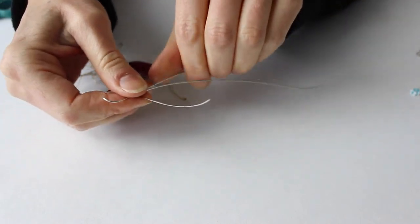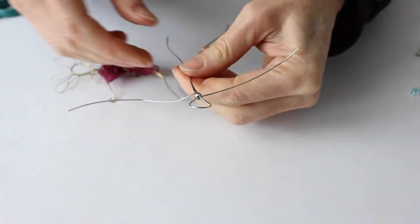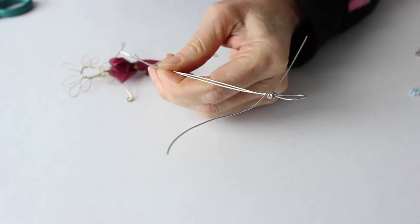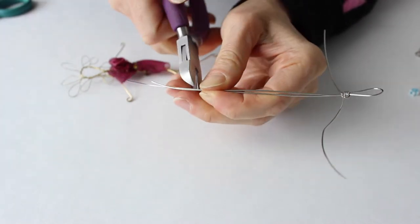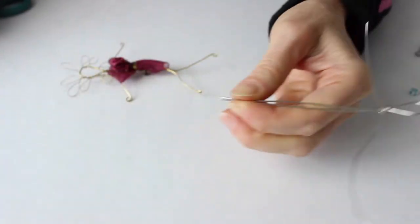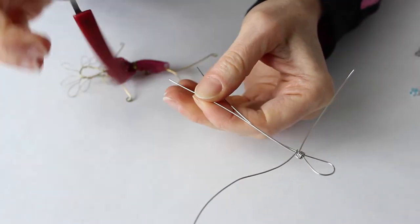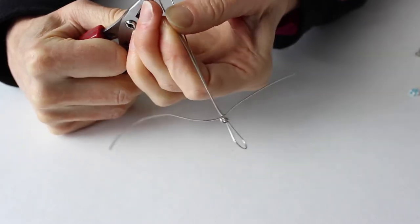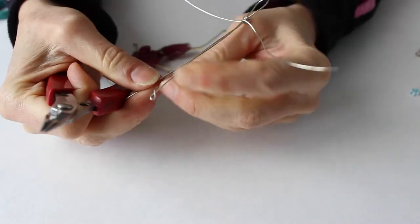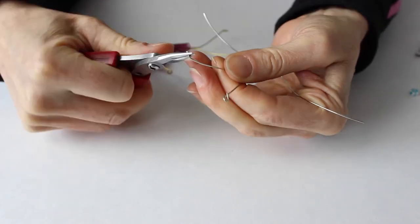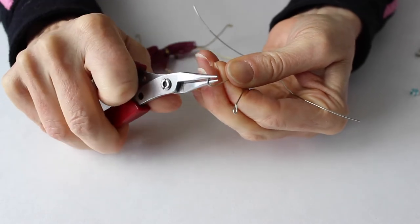At this point you can figure out how long you want them to be and then trim them a little longer than what you want. With your round pliers you're just going to bend them up. It doesn't have to be perfect. Just bend the ends to form the feet.